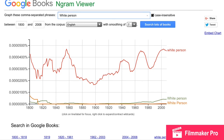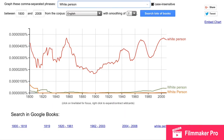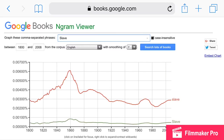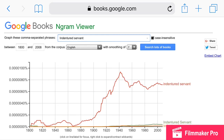The word 'white person' has been fluctuating ever since the 1800s — it's been in a lot of literary sources. The word 'eugenics' took a rise in the early 1900s, went sky-high around 1920, went down around the 60s, and has come back up now. The word 'slave' was used at a high rate back then, really peaking around 1860. The word 'indentured servitude' was barely used back then — it took off around the 1900s and has been on the rise ever since.